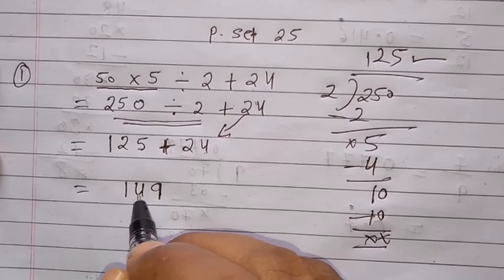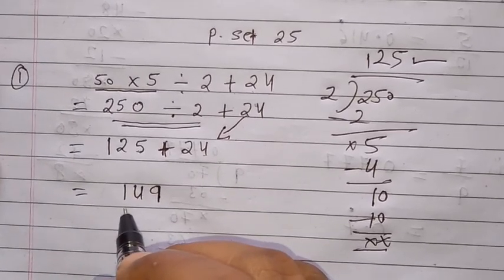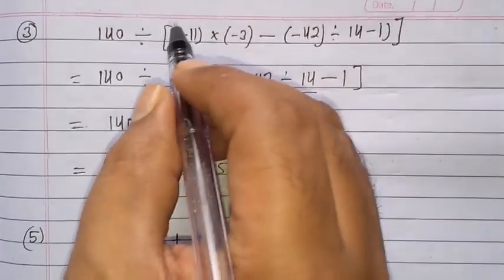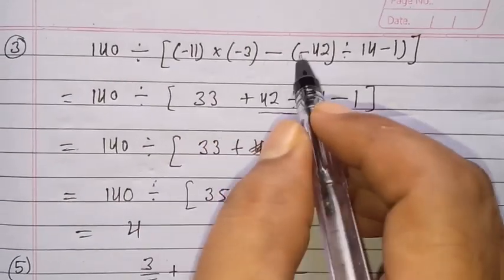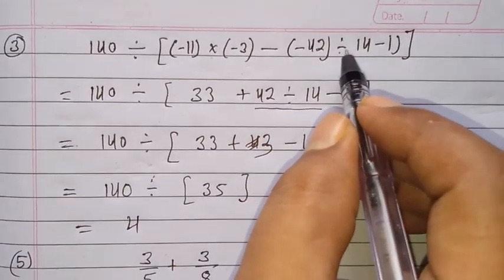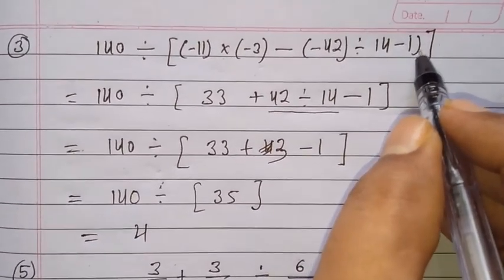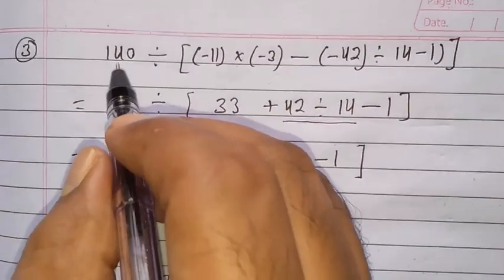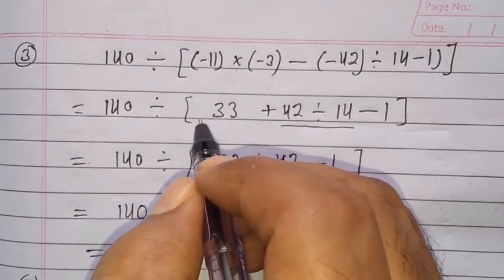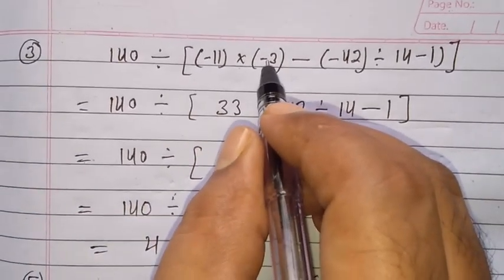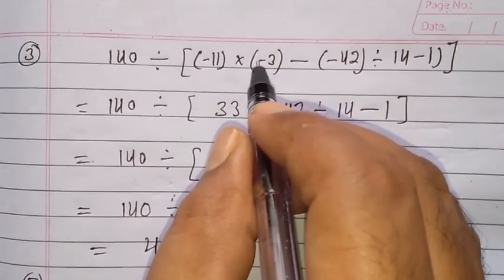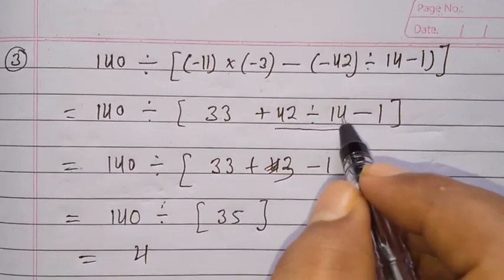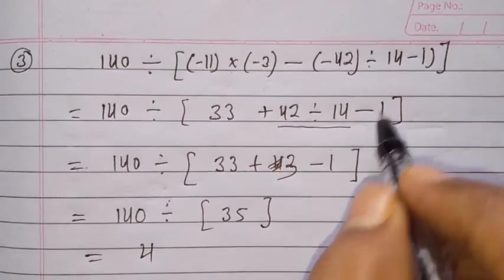Now question number 3: 140 divided by, in the bracket, minus 11 into minus 3, minus, in the bracket, minus 42 divided by 14 minus 1, bracket close, big bracket. We first solve the small bracket. Write 140 with the division sign and the big bracket. Minus 11 × minus 3: minus × minus = plus, so 11 × 3 = 33.